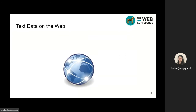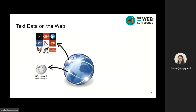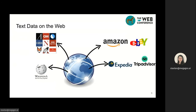The web contains all sorts of text data. Some data mainly contains factual or objective information, such as Wikipedia or news articles. Meanwhile, a large portion of the text data is largely subjective. For example, user reviews from online shopping, travel booking, or restaurant reservation websites.